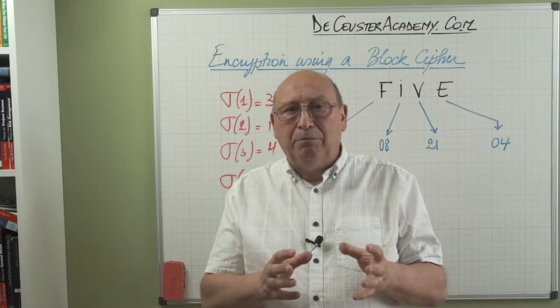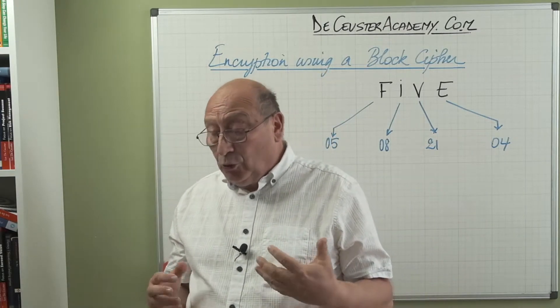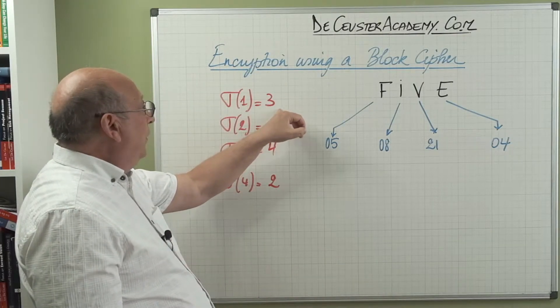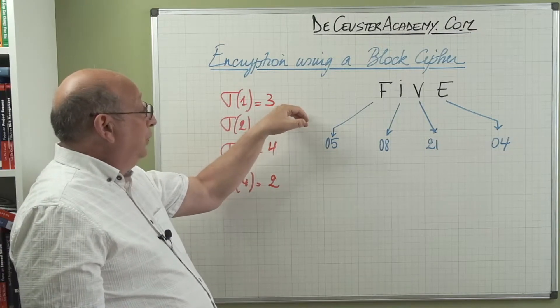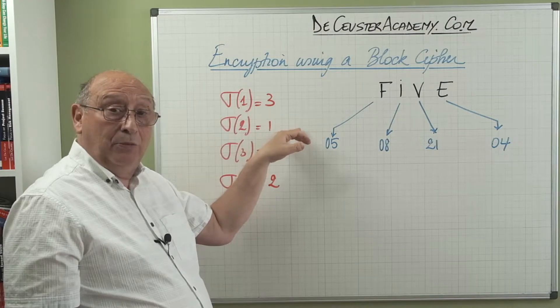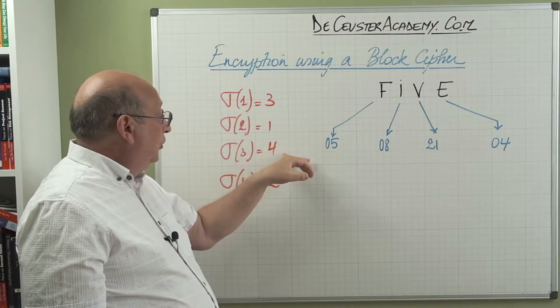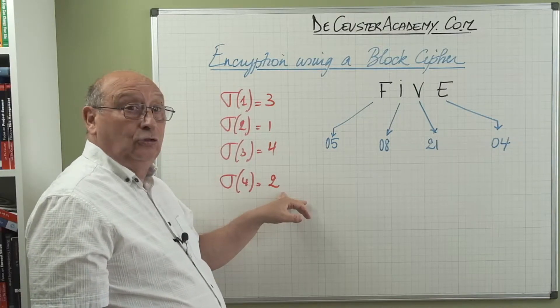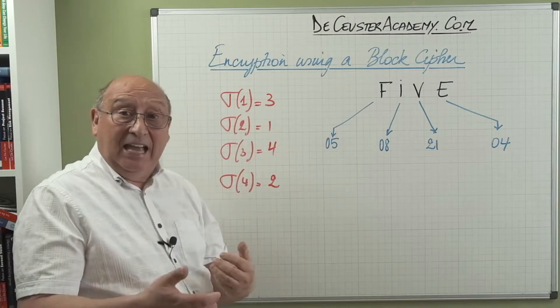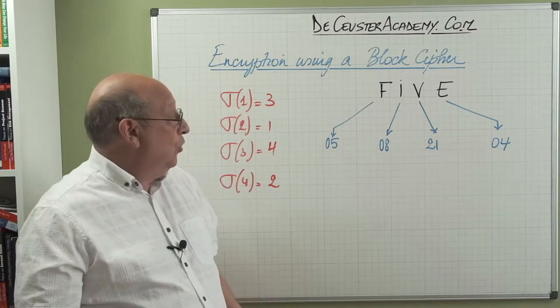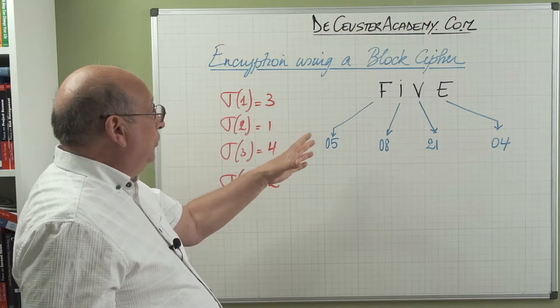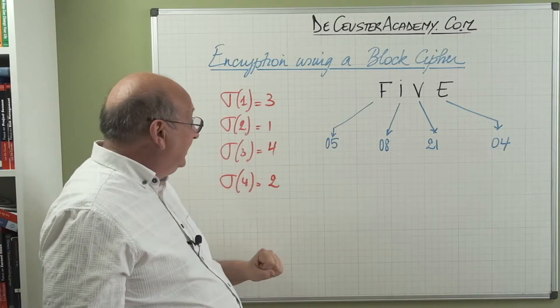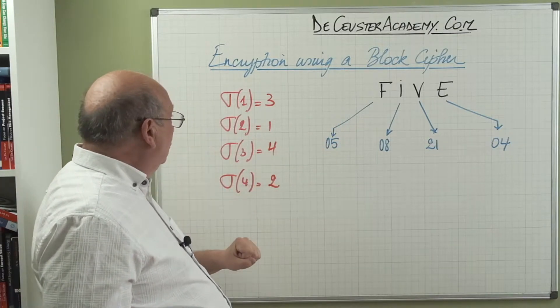Now we are going to add a different number depending on the position of the number in the total message. We start basically here with four blocks. Block number one, or the first letter, we will add three. For the second letter we will add one. For the third letter we will add four, and for the fourth letter we will add two. And then five, six, seven, eight, again we repeat this way of working. Now when we look at this, we have the word FIVE to encode.